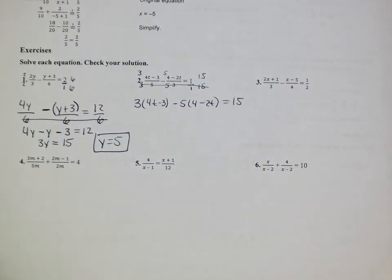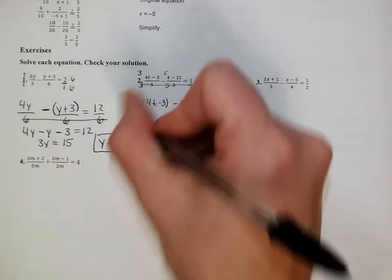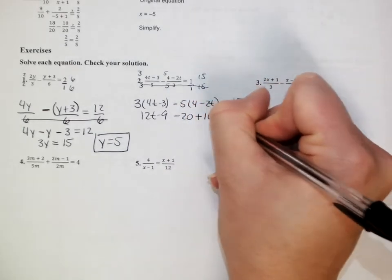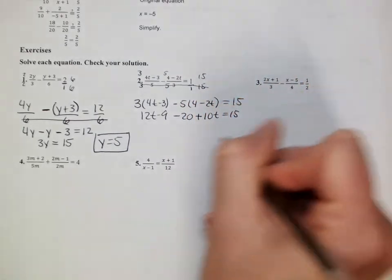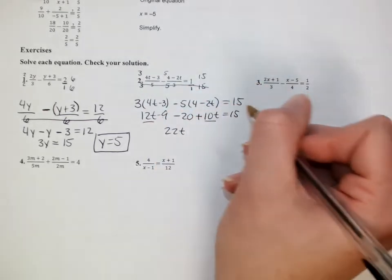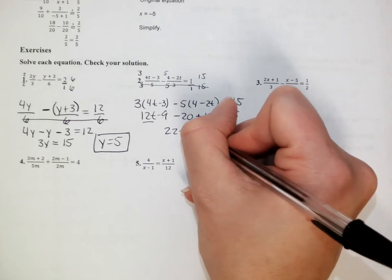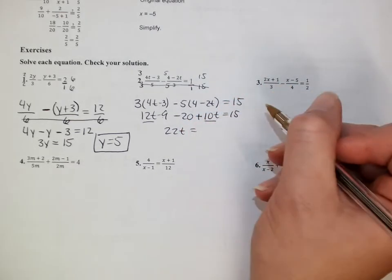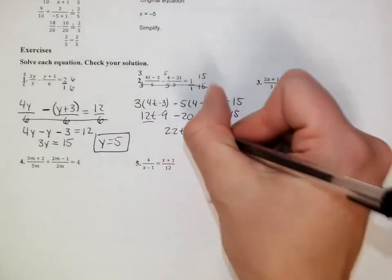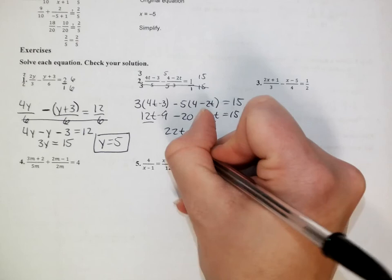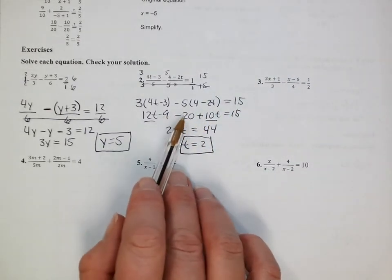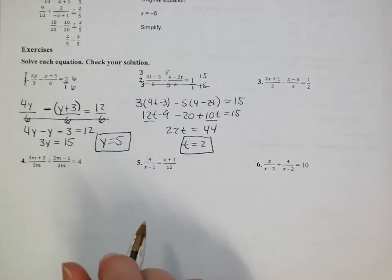Here, again, this is an equation you've been solving for quite a while. We just start by distributing. 12t minus 9 minus 20. 12t plus 10t. Watch out for those negative signs. 12t and 10t is 22t. Negative 9 and negative 20 is a negative 29. If I added that to the other side, 15 plus 29 is going to be a 44. It's real convenient when I divide, t equals 2. So I did skip a little step there. I combined those like terms and then went ahead and added them to this other side just to save some space and time.